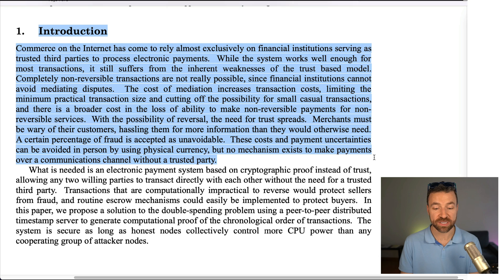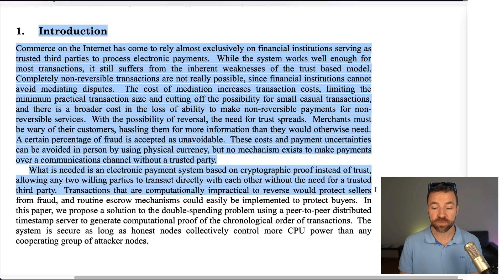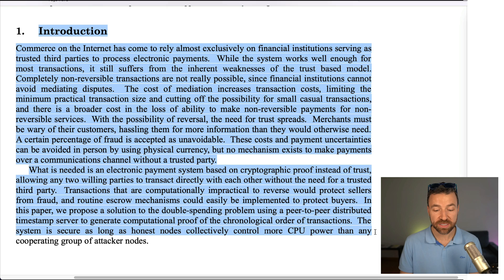What is needed is an electronic payment system based on cryptographic proof instead of trust, allowing any two willing parties to transact directly with each other without the need for a trusted third party. Transactions that are computationally impractical to reverse would protect sellers from fraud, and routine escrow mechanisms could easily be implemented to protect buyers. In this paper, we propose a solution to the double spending problem using a peer-to-peer distributed timestamp server to generate computational proof of the chronological order of transactions. The system is secure as long as honest nodes collectively control more CPU power than any cooperating group of attacker nodes.